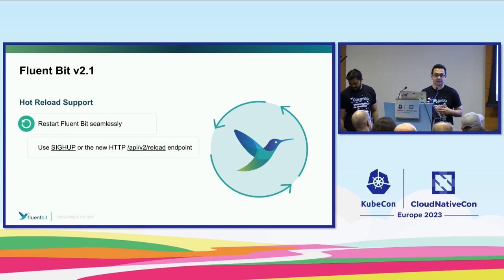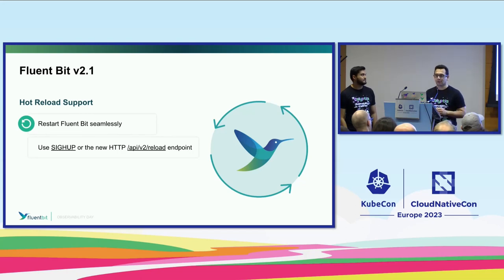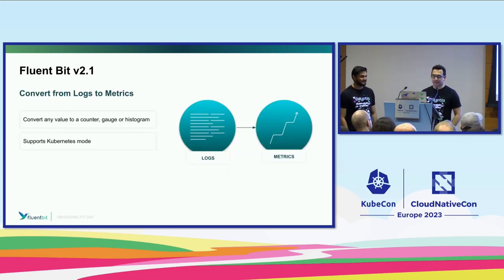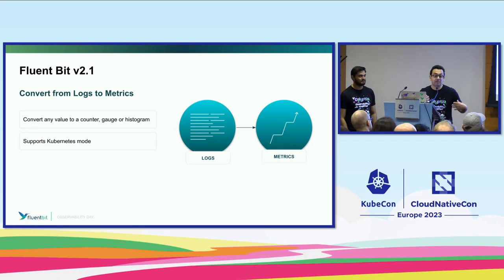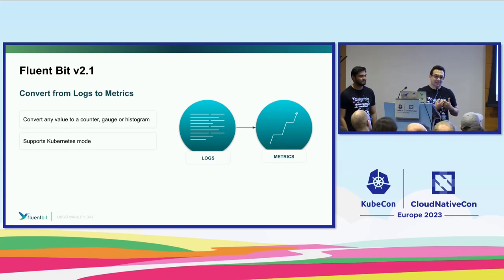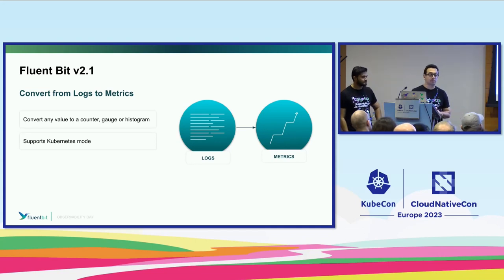You can trigger hot reload through a SIGHUP signal or through the HTTP endpoint. Security folks — you have to enable this in the configuration, it's not there by default, of course. You don't want somebody to just make a request and restart your agent. One of the problems people had is like, I have this application that is shipping a metric but as a log — maybe it's shipping a JSON that says my counter equals five, then six. But they wanted to expose this in Grafana, ingest it into Prometheus as a metric. Now, with this new filter, you can convert any type of log to a metric.